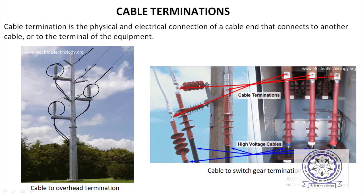Three cables of three phases come like this and join the transmission line here. This is how the terminations will be. Here another example is shown — this is the termination construction.